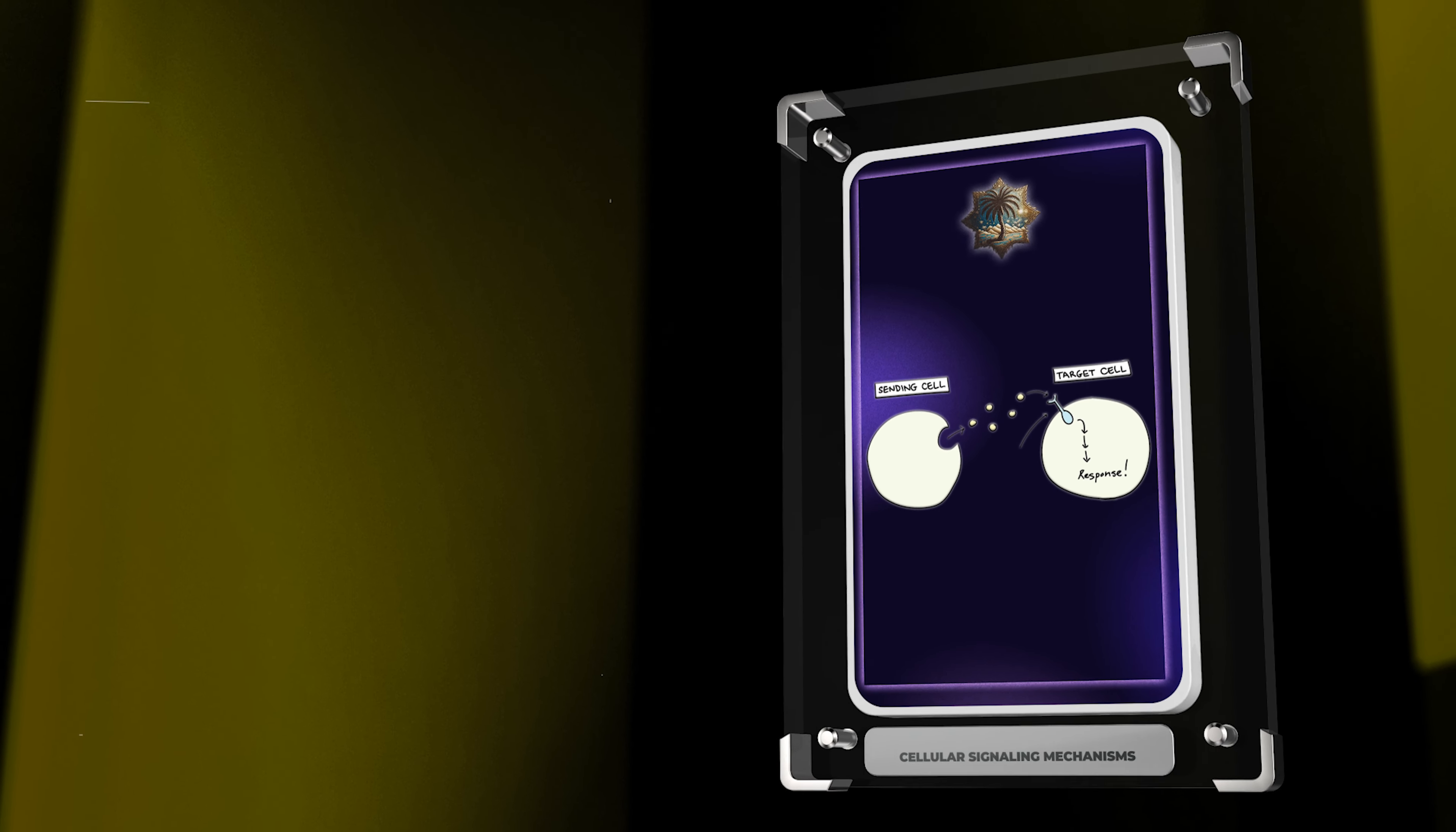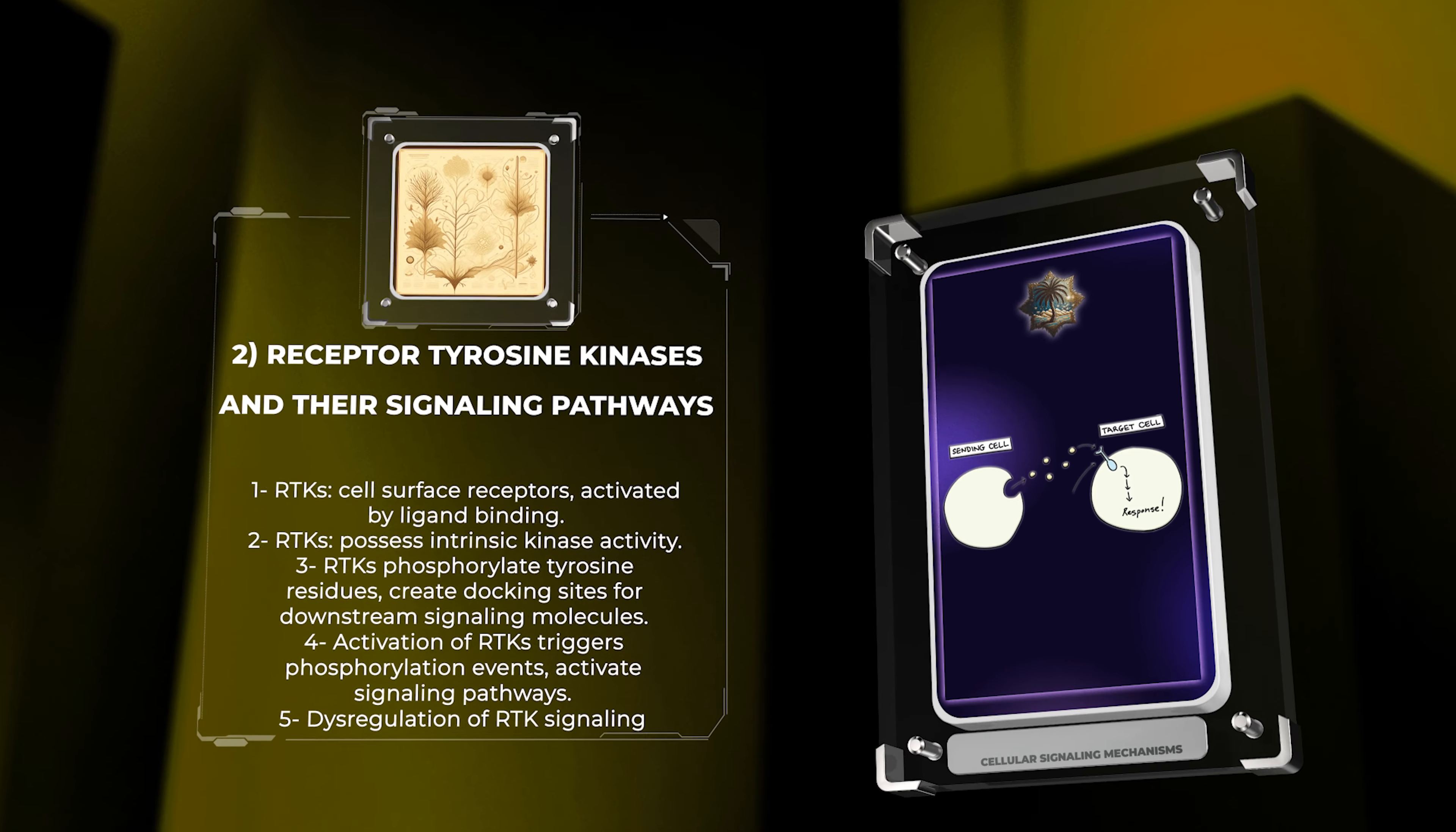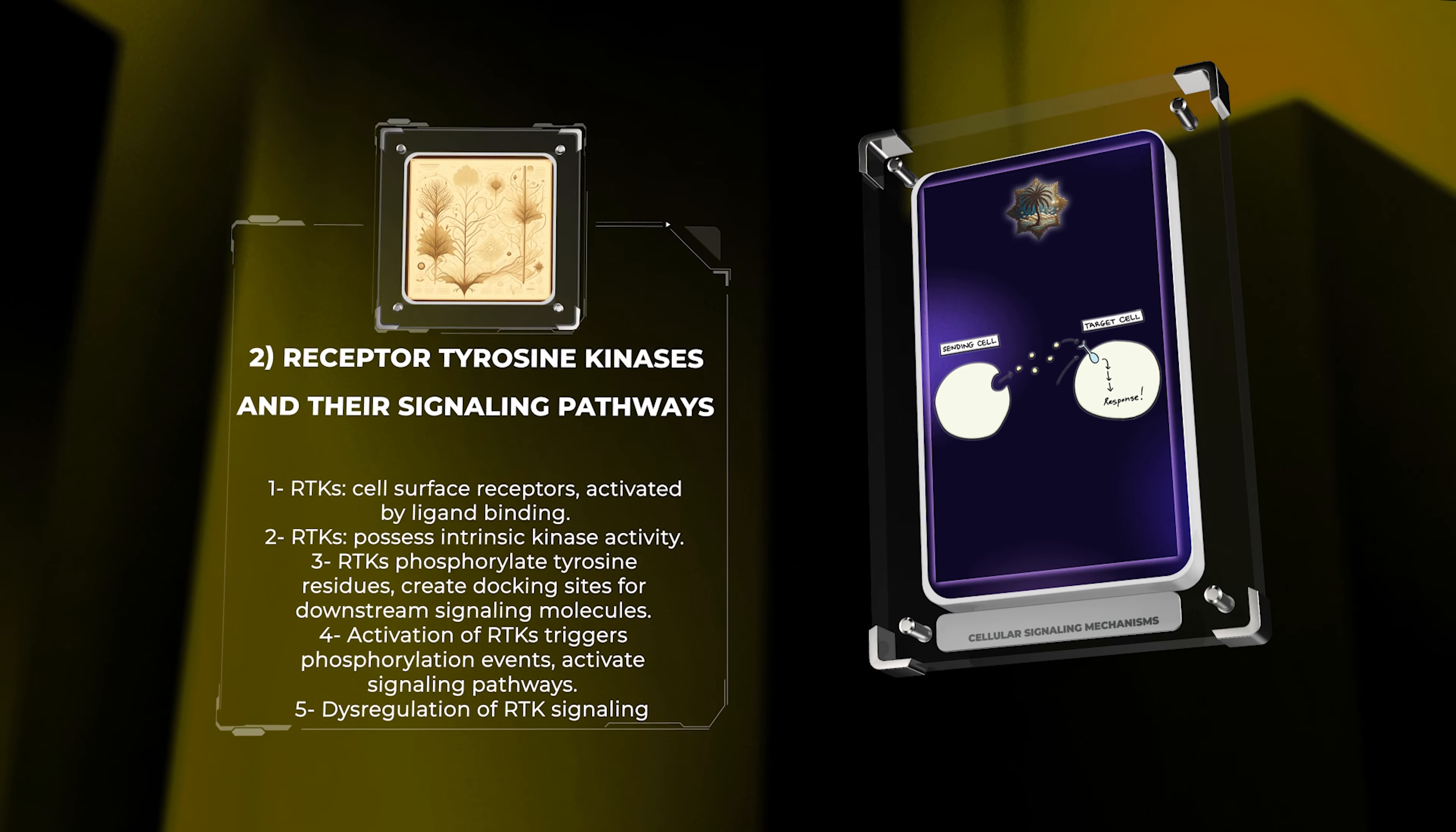Receptor tyrosine kinases (RTKs) are a family of cell surface receptors that are activated by ligand binding and possess intrinsic kinase activity. Once activated, RTKs phosphorylate tyrosine residues in their cytoplasmic domains, creating docking sites for downstream signaling molecules. This triggers a cascade of phosphorylation events, leading to the activation of various signaling pathways involved in cellular growth, differentiation, and metabolism. Dysregulation of RTK signaling has been implicated in various diseases, including cancer.